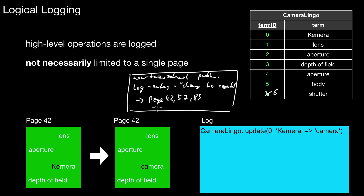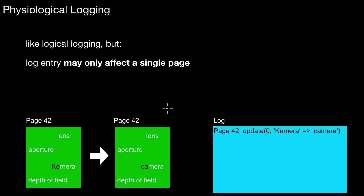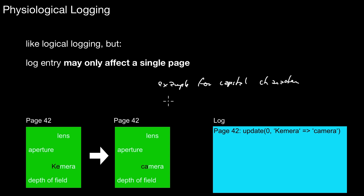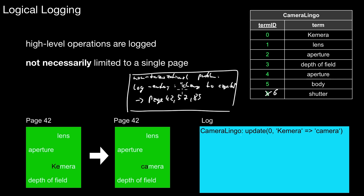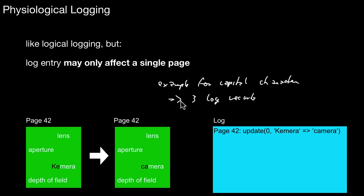Going back to the problematic case — assume you have a log entry where you change all terms to start with a capital character, affecting three pages. In physiological logging, you would have to write three different log records, three physiological log records with basically the same high-level information. You keep the high-level information about changing to a capital character, but it's three records: one for page 42 with the high-level info, then page 57, then page 85. That's what you do in physiological logging.